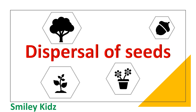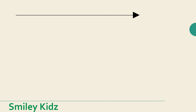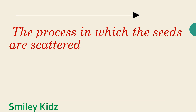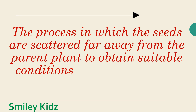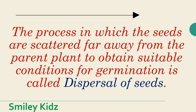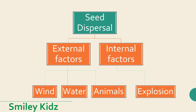Dispersal of seeds. The process in which the seeds are scattered far away from the parent plant to obtain suitable conditions for germination is called dispersal of seeds. Seed dispersal is divided into two factors: external factors and internal factors. External factors are dispersal by wind, dispersal by water, and dispersal by animals. Internal factor is dispersal by explosion.